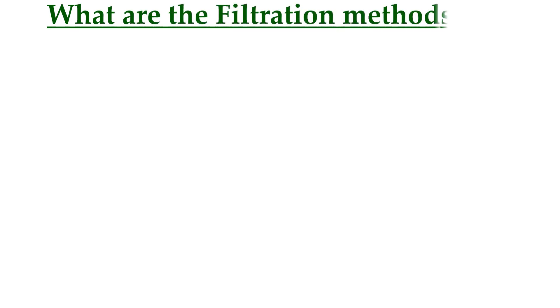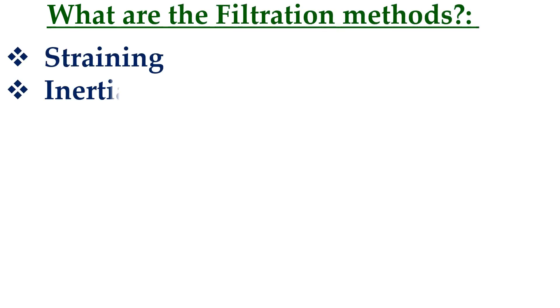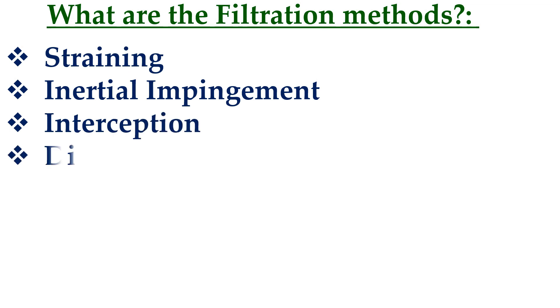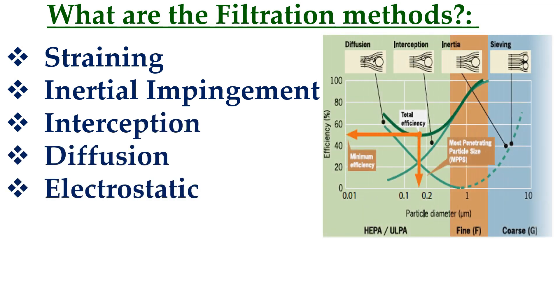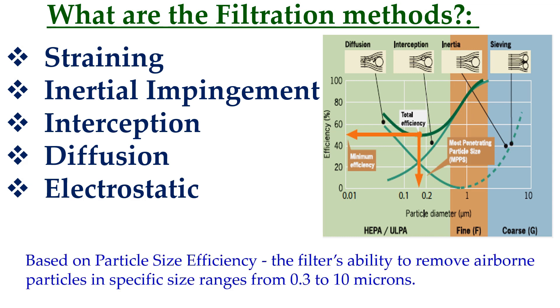There are five methods of air filtration: straining filtration, inertial impingement filtration, interception filtration, diffusion filtration, and electrostatic filtration. Based on particle size efficiency, the filter's ability to remove airborne particles covers specific size ranges from 0.3 to 10 microns.